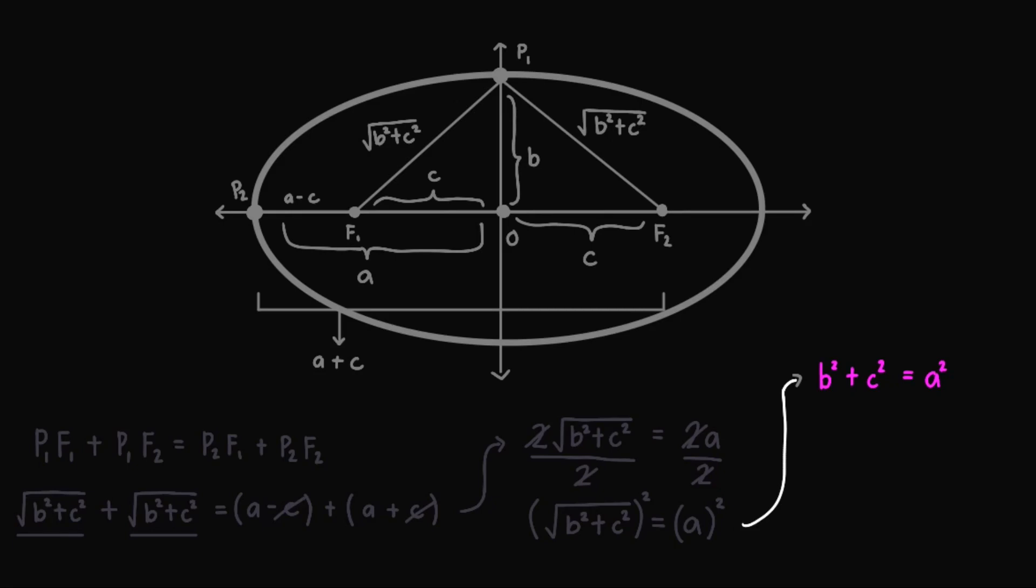What we want to do is we obtain C in terms of A and B. So we need to isolate C. We start by moving B squared to the right. And so we'll have C squared equals A squared minus B squared. Take the square root and we'll have C equals the square root of A squared minus B squared. And this is what we want. We obtained the answer since we have written C in terms of A and B.